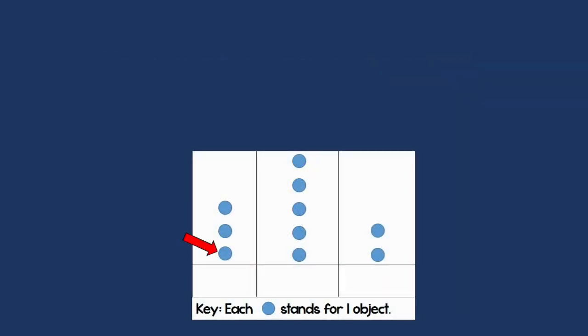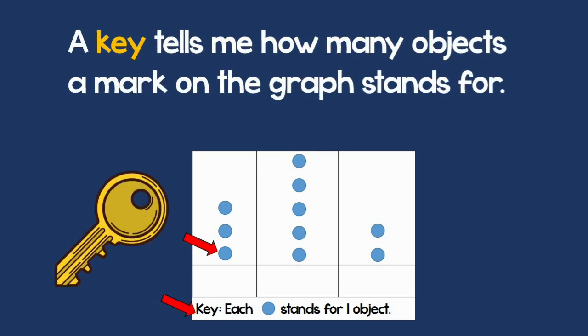This is a mark on the graph. The key tells me how many objects a mark on the graph represents. What does that mean? Let's see an example.